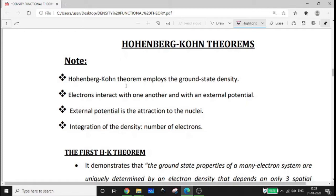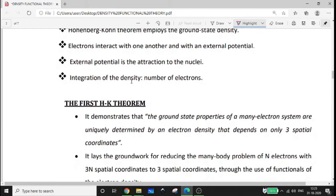The HK theorem employs the ground state density. Electrons interact with one another and with an external potential. In DFT, the external potential is the attraction to the nuclei. Integration of the density gives the number of electrons.